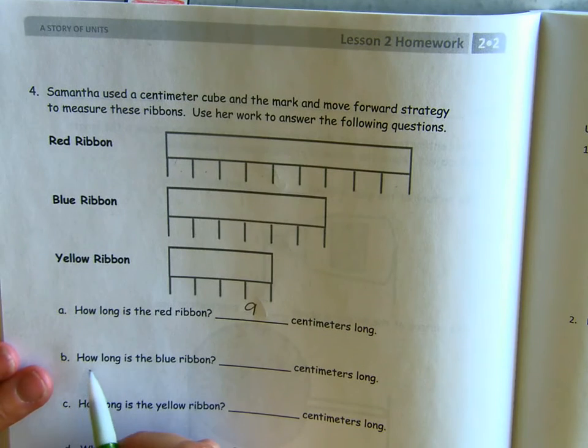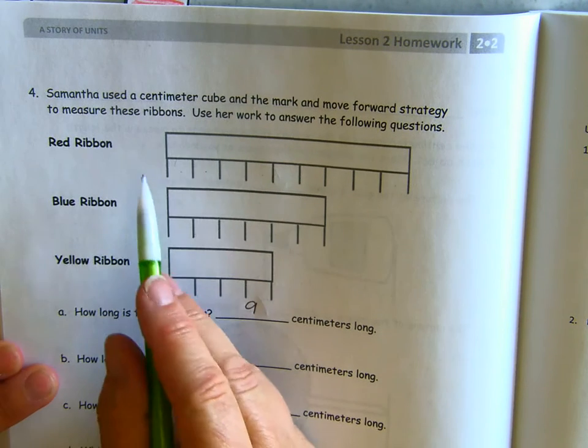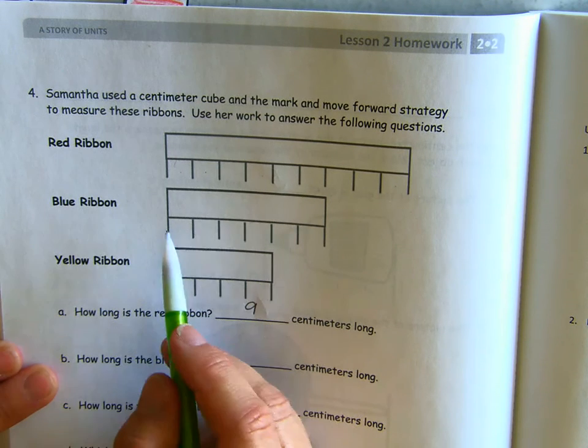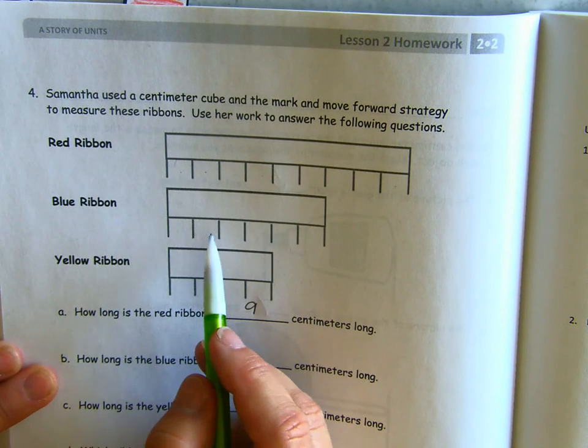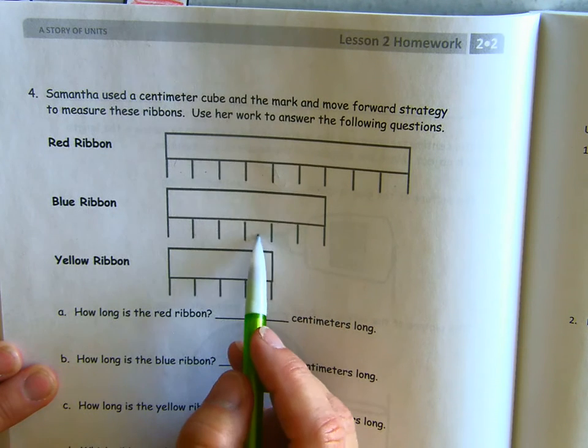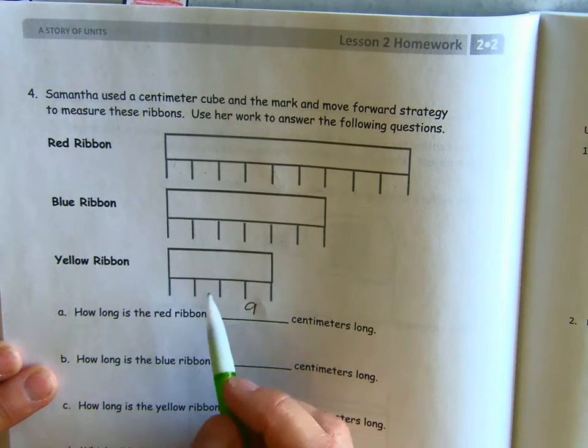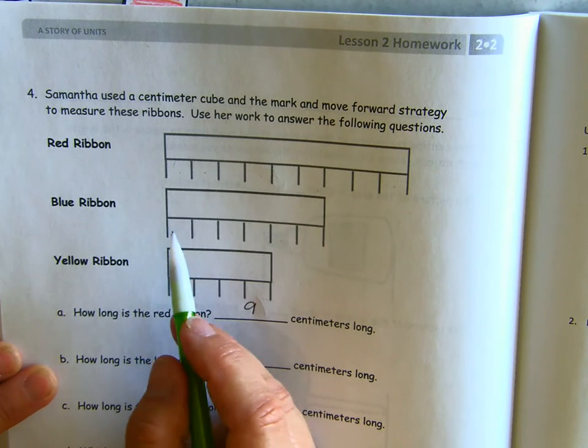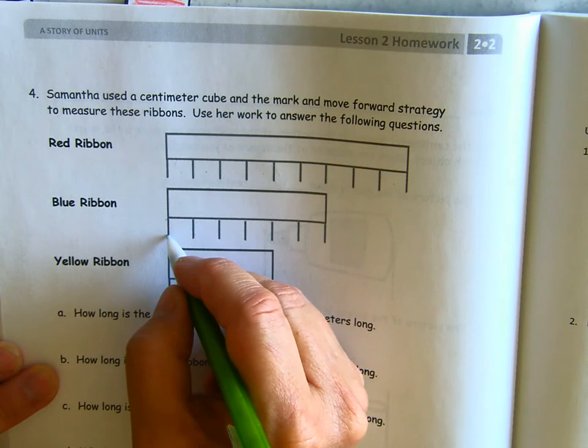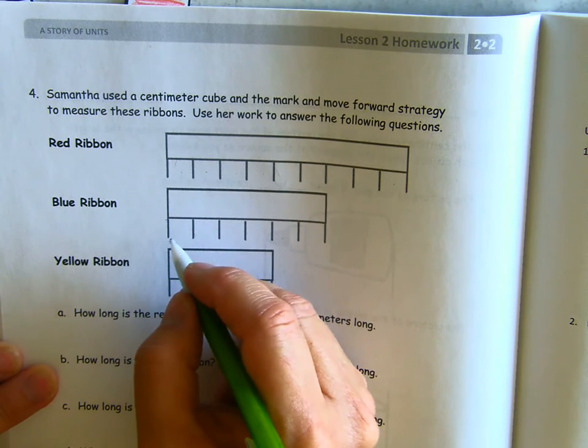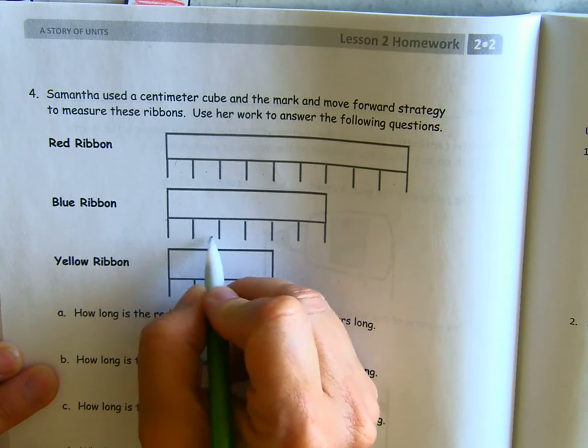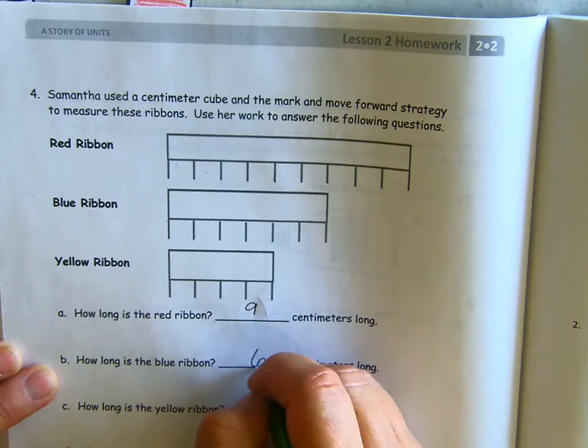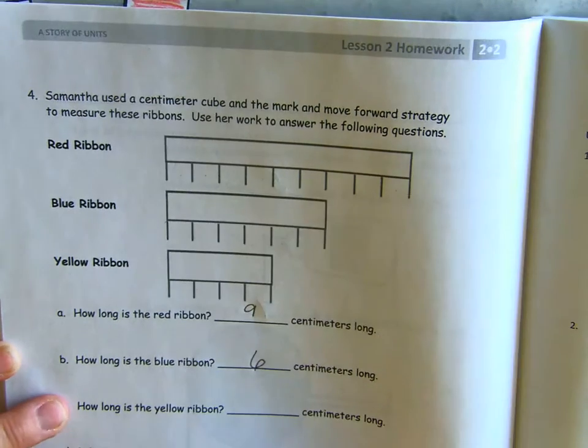B says, how long is the blue ribbon? This is the blue ribbon and we're just going to count the centimeters. One, two, three, four, five, six. Be careful to count the spaces and not the lines because this isn't a centimeter yet. That's zero. So, we need to count this space as one, two, three, four, five, six centimeters long.